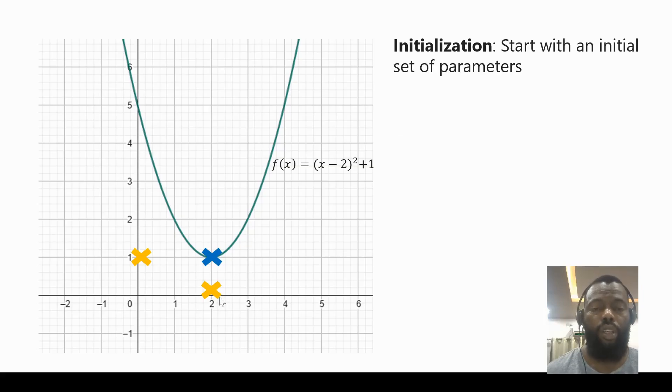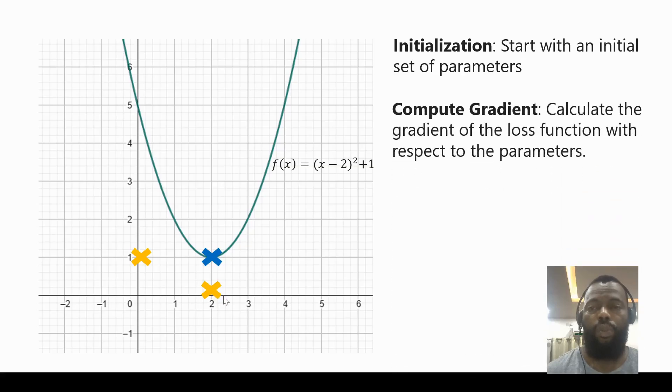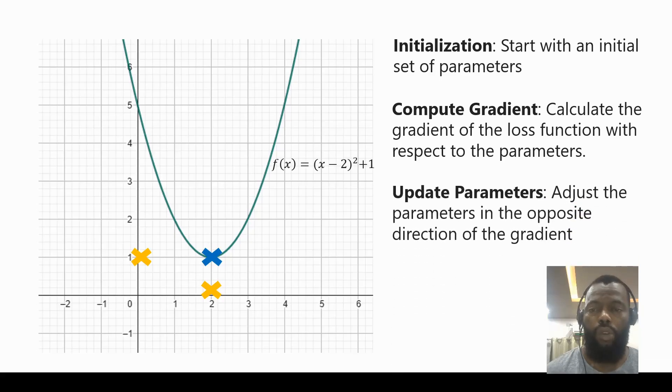We can choose a random value, and we have to calculate the gradient of the loss function with respect to the parameters. We have to adjust the parameters in the opposite direction of the gradient and we continue this process.